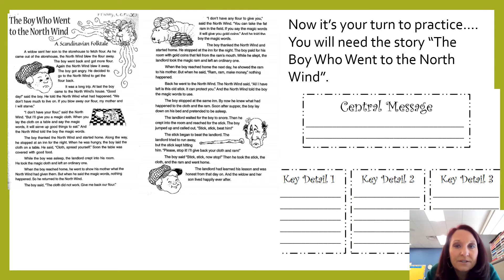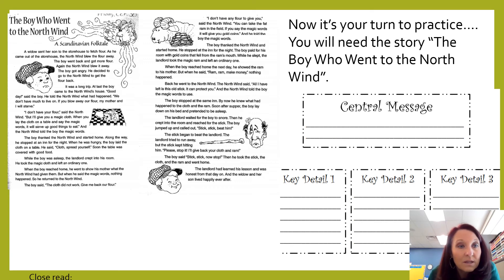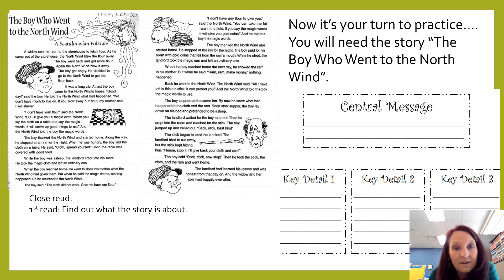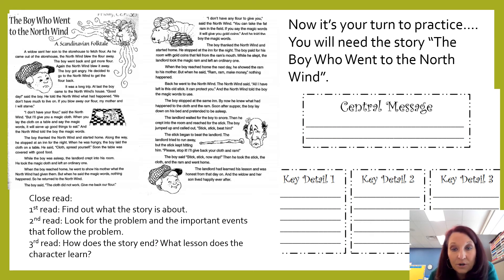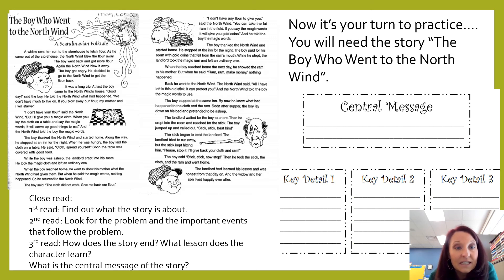Now it's your turn to practice. You're going to need the story, The Boy Who Went to the North Wind. Onliners, if you have not yet picked up your red folder — because this story is in your red folder — you can click on the link in Schoology and open the story there since I'm attaching it to the assignment. You're going to do a close read: first, read it once to find out what the story is about. During your second read, look for the problem and the important events that follow. On your third read, figure out how the story ends and what lesson the character learns. Key detail one is usually the problem; detail two is something important after the problem; detail three is the lesson at the end.